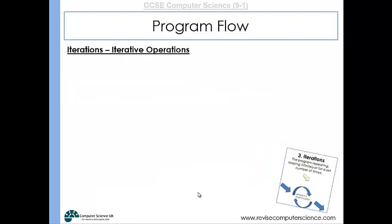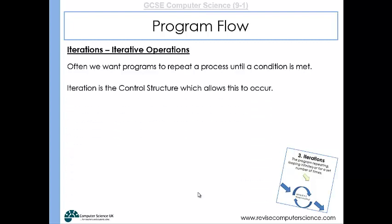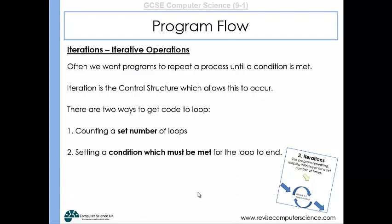When it comes to iteration, we sometimes want our programs to repeat a process until a condition is met or for a set number of times. There are two ways to get our code looping: counting a set number of loops, or setting a condition which must be met for a loop to end.